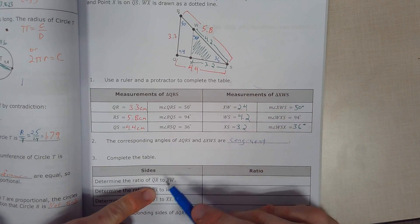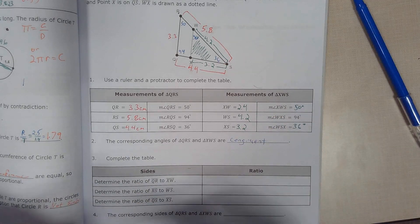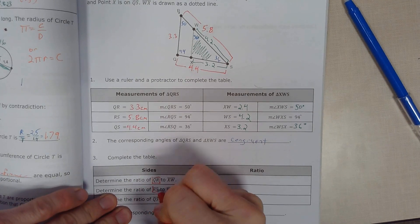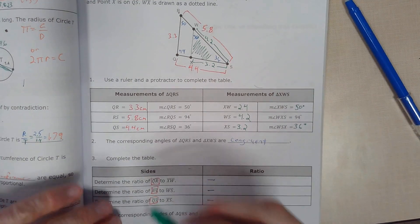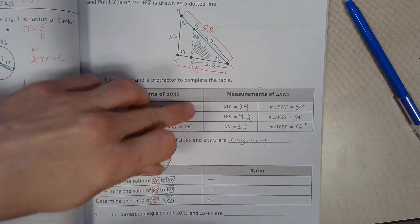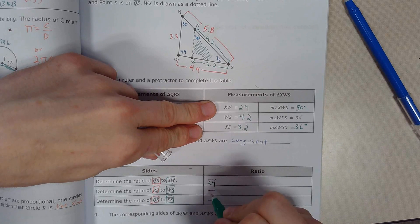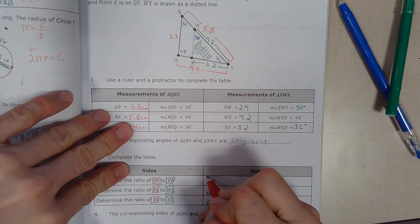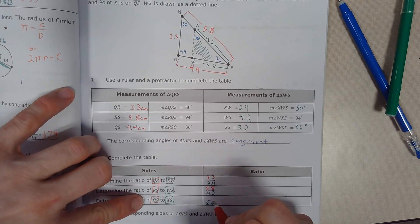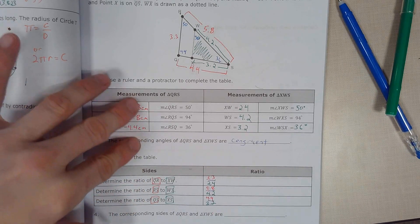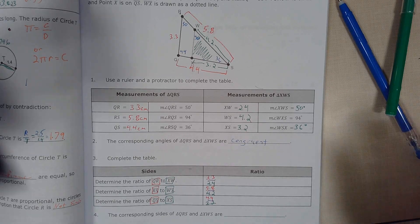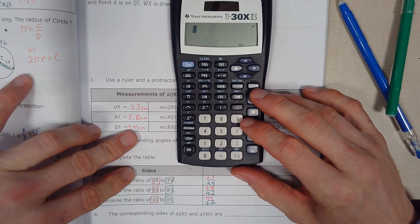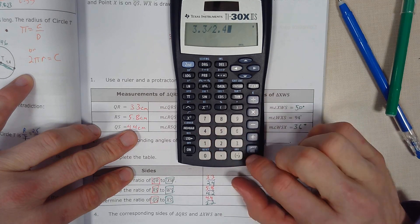So QR is the red triangle. I'll go purple for my ratio here. This is going to be red triangle to my green triangle line segments. XW is 2.4, WS is 4.2, and 3.2. My red triangle ones here are 3.3, 5.8, and 4.4. If you get slightly different angles and measurements from this, that's okay. You'll still get basically the same result.